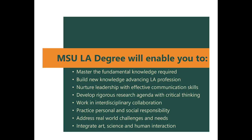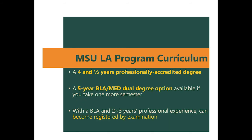Our program has a great culture of being a big family among students, alumni, and faculty. You can find more information on our program webpage. Our program offers a four-and-a-half-year professional accredited degree and is the only accredited Landscape Architecture undergraduate program in Michigan. If you stay one more semester, you will be able to earn both a BLA and a Master of Environmental Design degree through our dual degree option. After graduating from our BLA program and gaining two to three years of professional experience, you will be able to take the license exam to become a professional Landscape Architect.